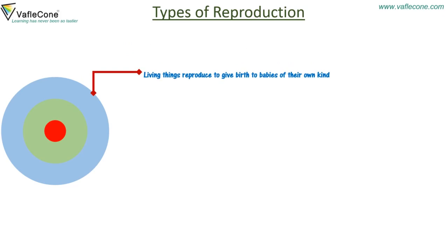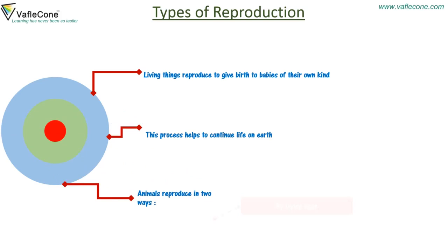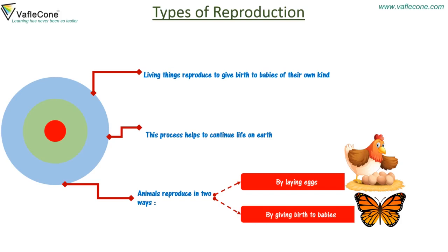Types of Reproduction. Living things reproduce to give birth to babies of their own kind. This process helps to continue life on earth. Animals reproduce in two ways: one, by laying eggs, and second, by giving birth to babies.